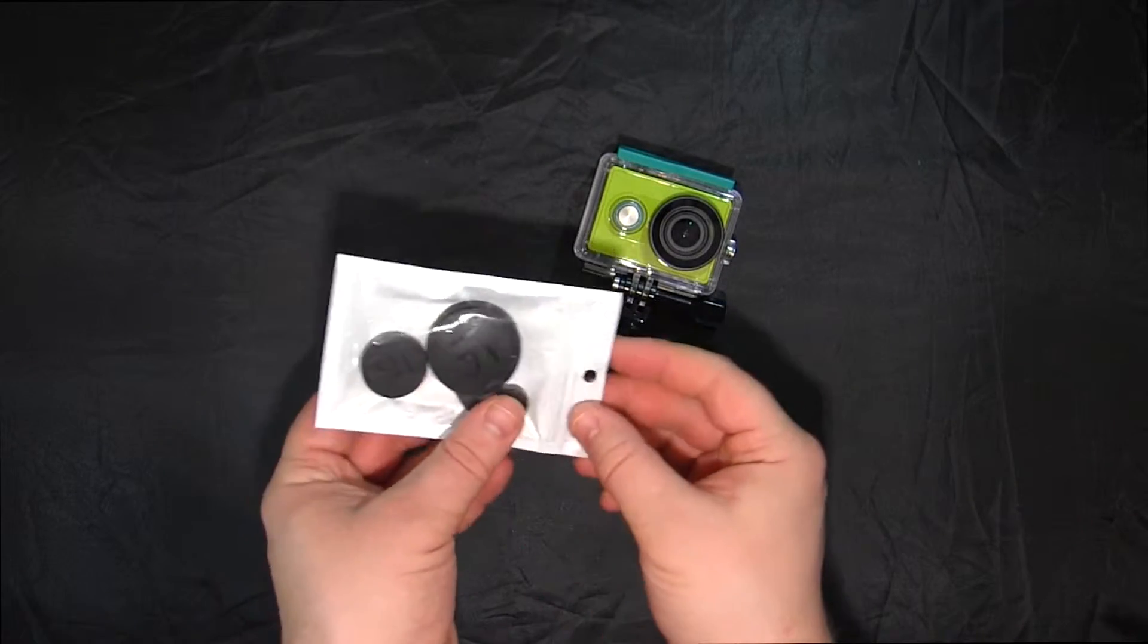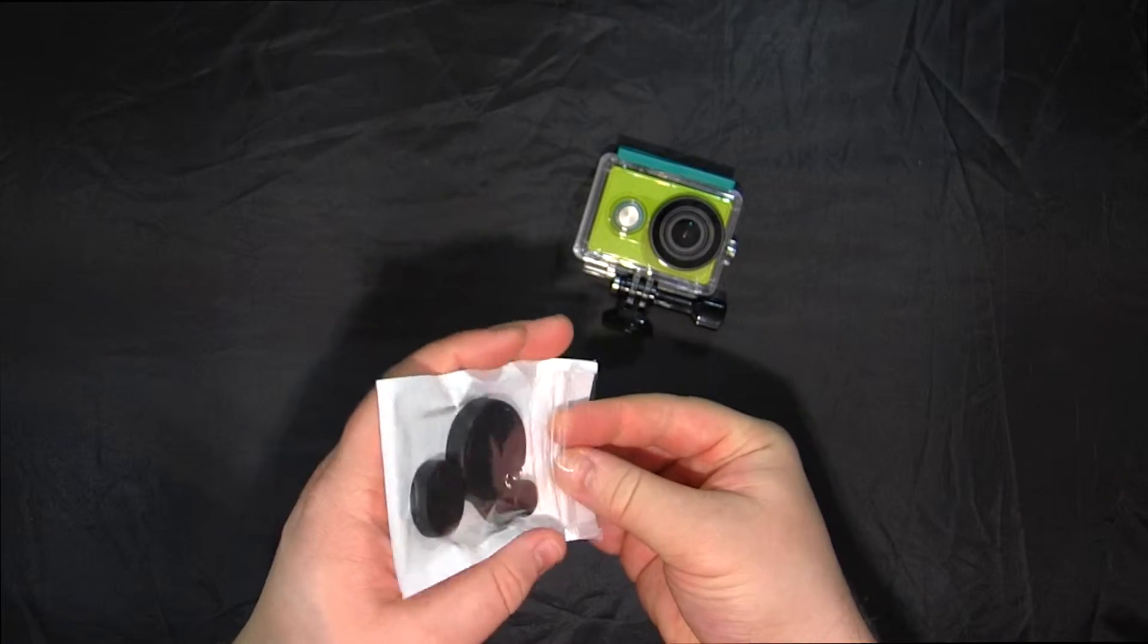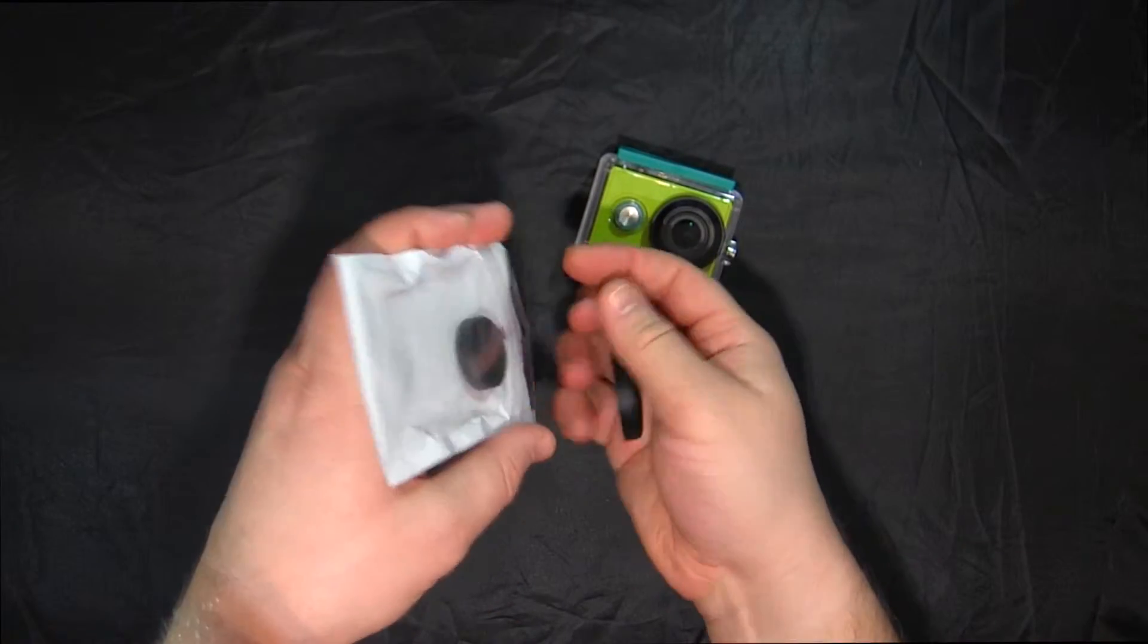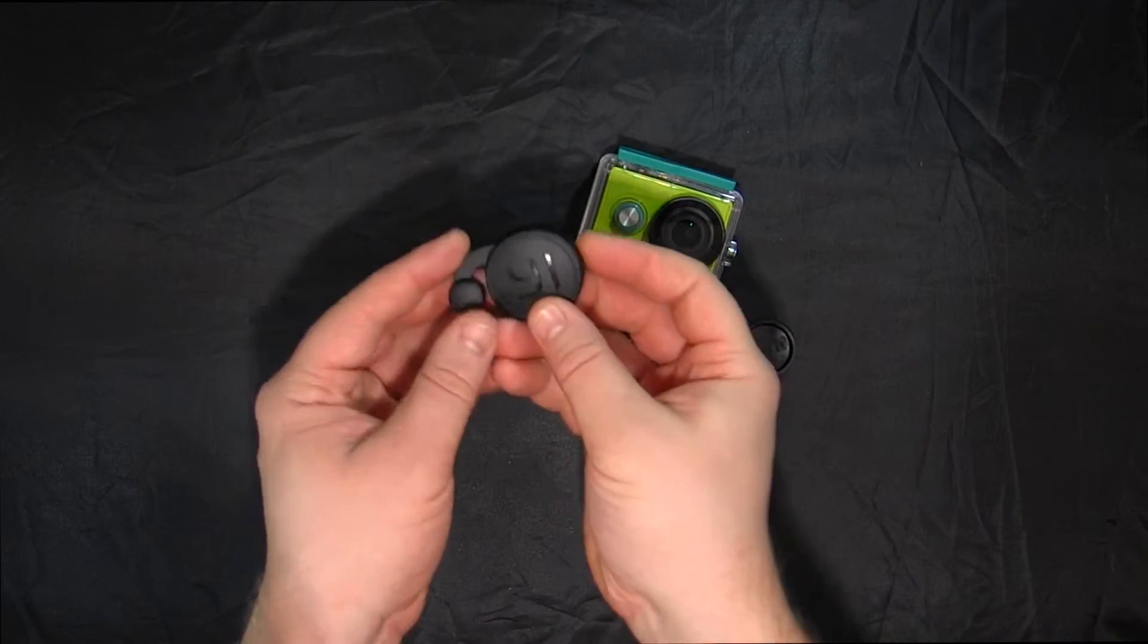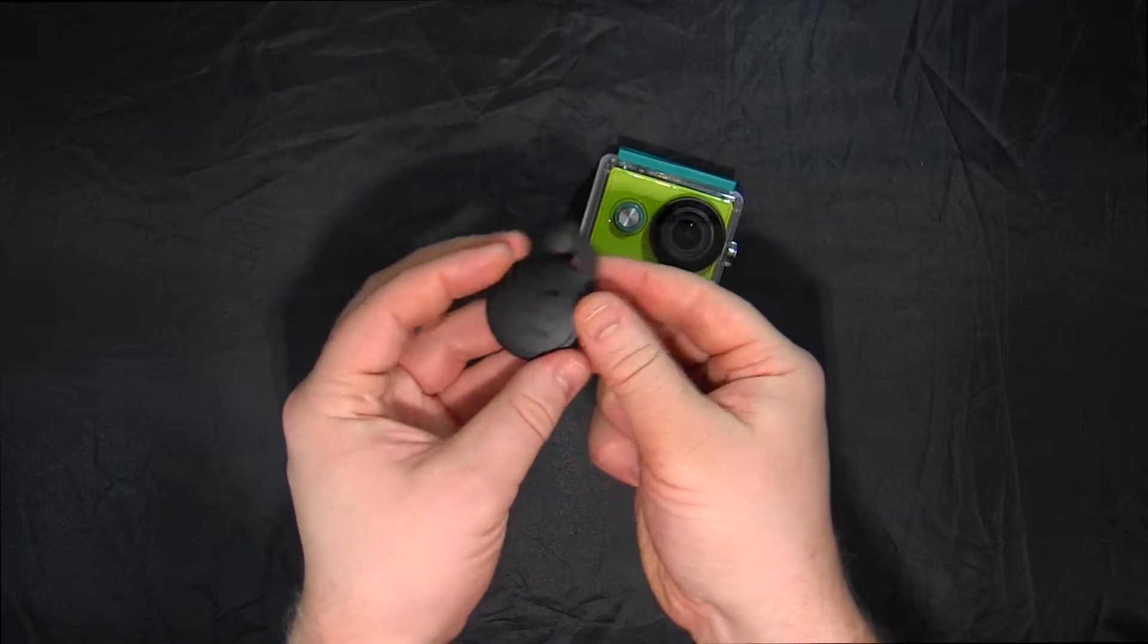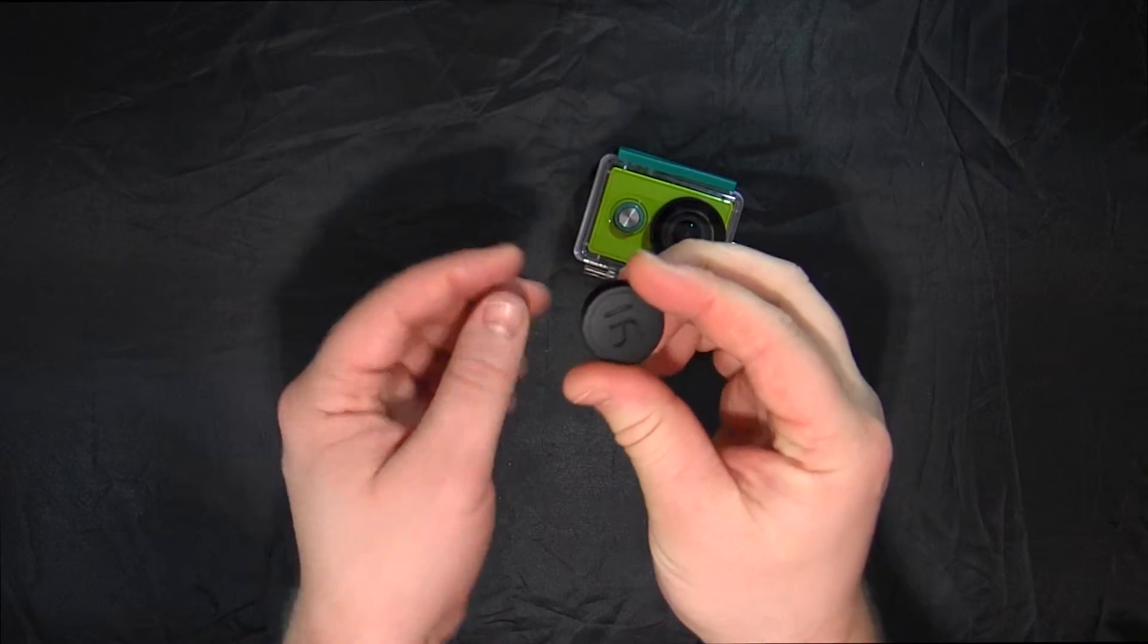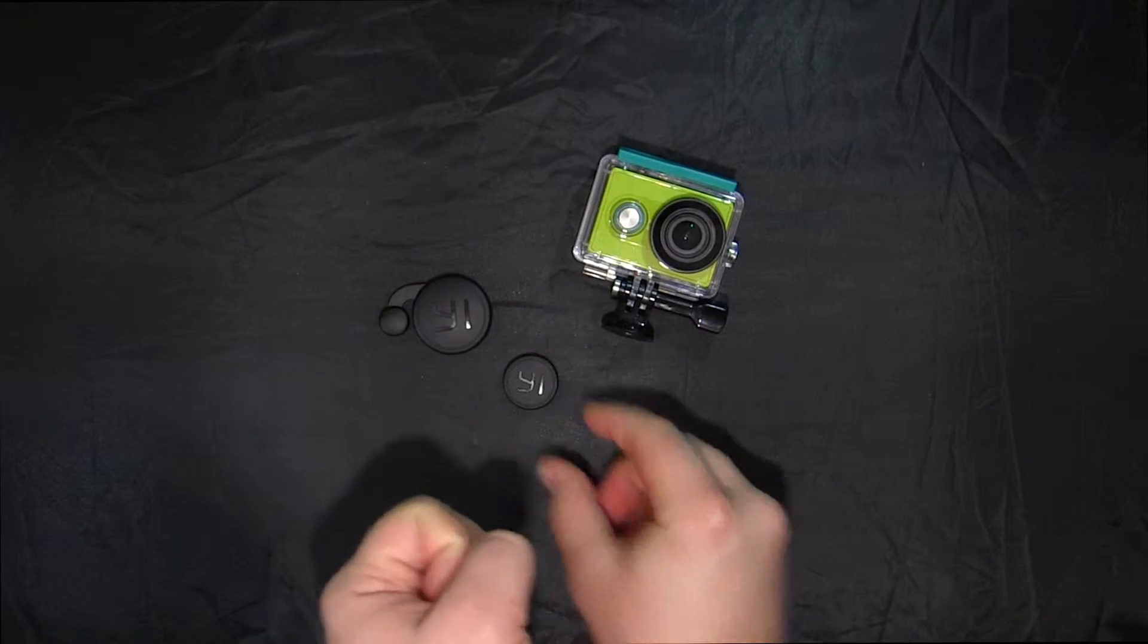А теперь давайте посмотрим на комплект крышечек для объектива и водонепроницаемого бокса. Не уверен точно, но мне кажется, что это оригинальные заглушки, изготовленные самой компанией Xiaomi. Как вы видите, на них так же, как и на водонепроницаемом боксе, присутствует логотип EI.